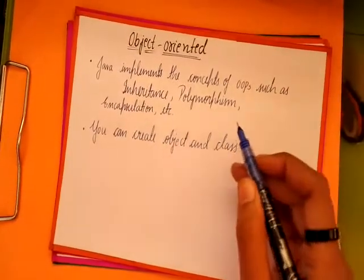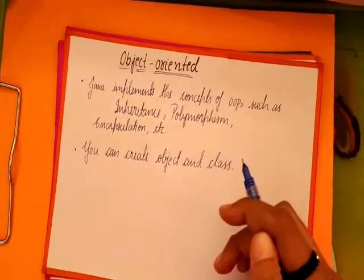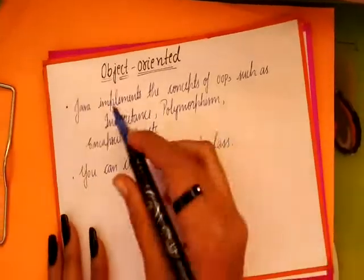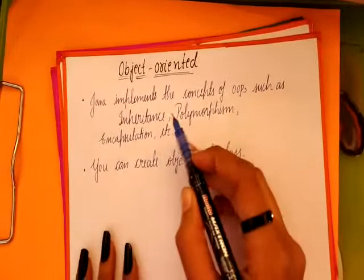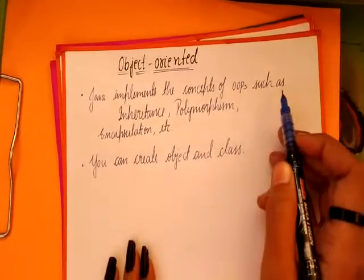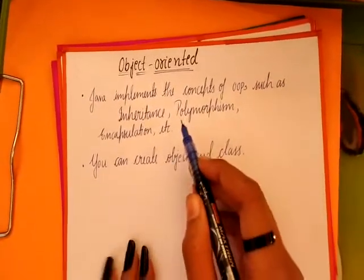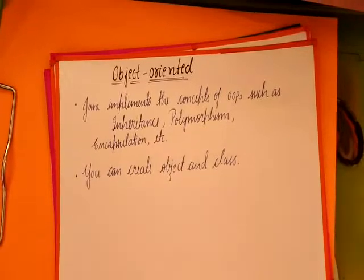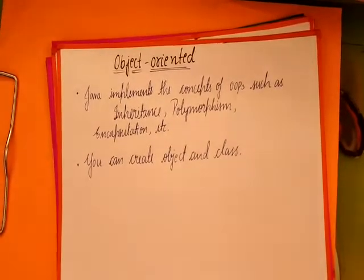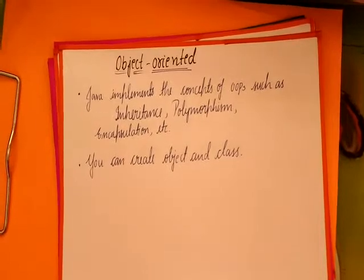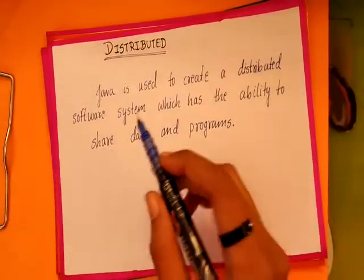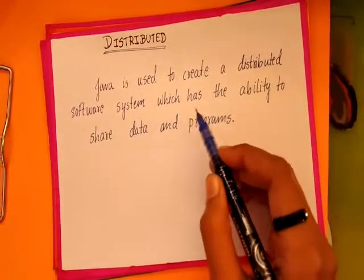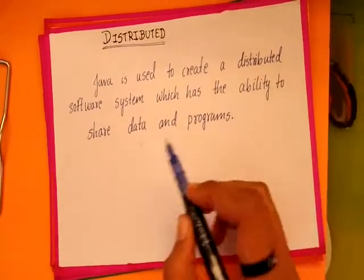The next feature is Object-Oriented. All the entities or elements in Java are considered as objects. It is an object-oriented programming language. Java implements the concepts of OOPS, such as encapsulation, inheritance, polymorphism, etc. You can also create objects and classes in Java. Therefore, it is an object-oriented programming language. The next feature is Distributed. Java is used to create a distributed software system, which has the ability to share data and programs.